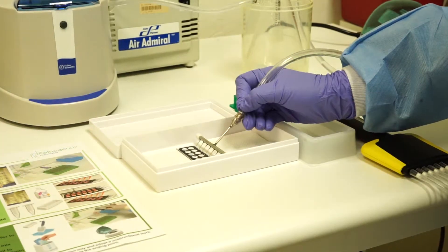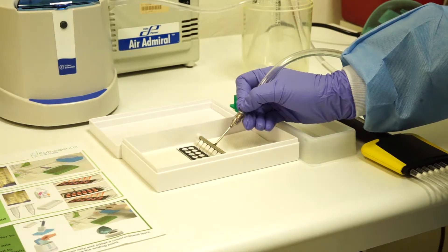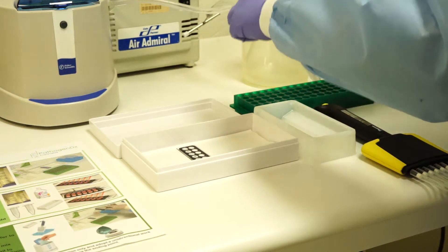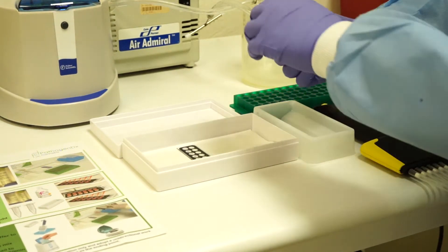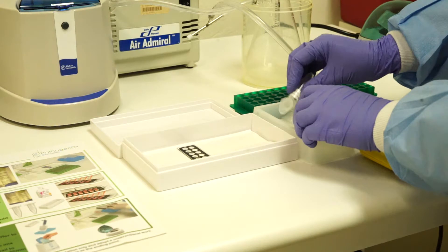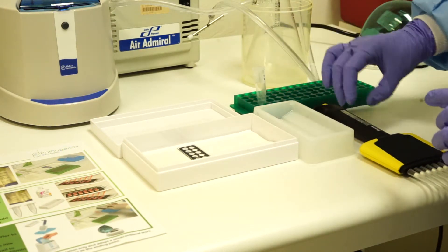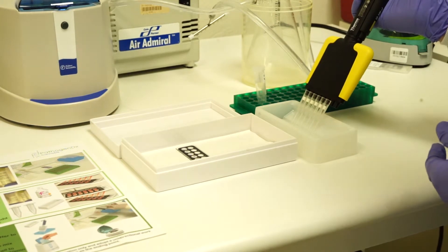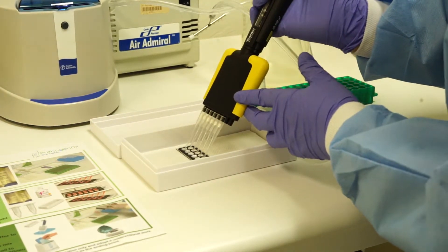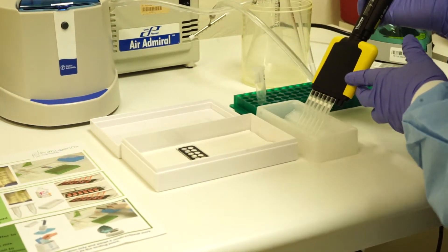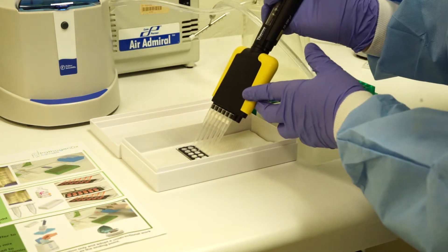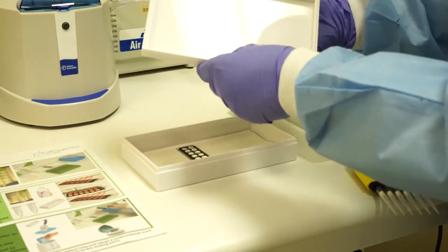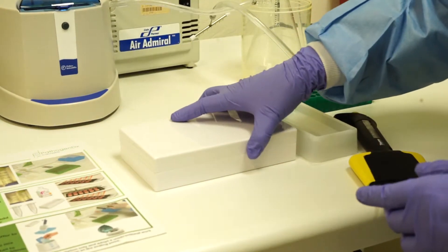Once the 30 minute hybridization is complete, aspirate the hybridization cocktail from the slide. Take your vortexed hybridization wash buffer and pour into a clean pipette basin. Set your pipetter to 75 microliters and carefully dispense onto each well. Once you have dispensed, aspirate and repeat the dispense for a total of two dispenses. This will stay in the hybridization chamber for 10 minutes.